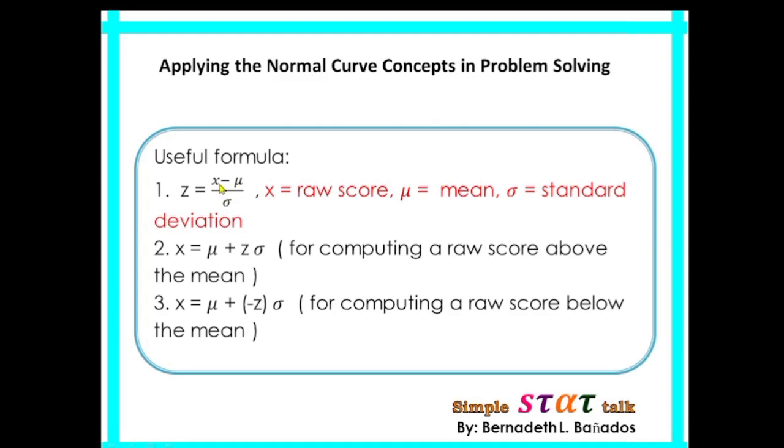X is for the raw score, μ is the mean, and σ is for the standard deviation. If we are looking for the raw scores above the mean, we are going to use this formula. And if we are going to find the value of a raw score below the mean, we are going to use this formula.